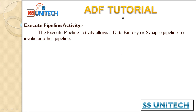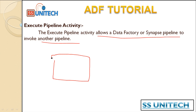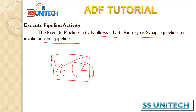The execute pipeline activity allows a Data Factory or Synapse pipeline to invoke another pipeline. For example, if we have created a pipeline that is loading data from one source to another, and that pipeline can be used in multiple places.